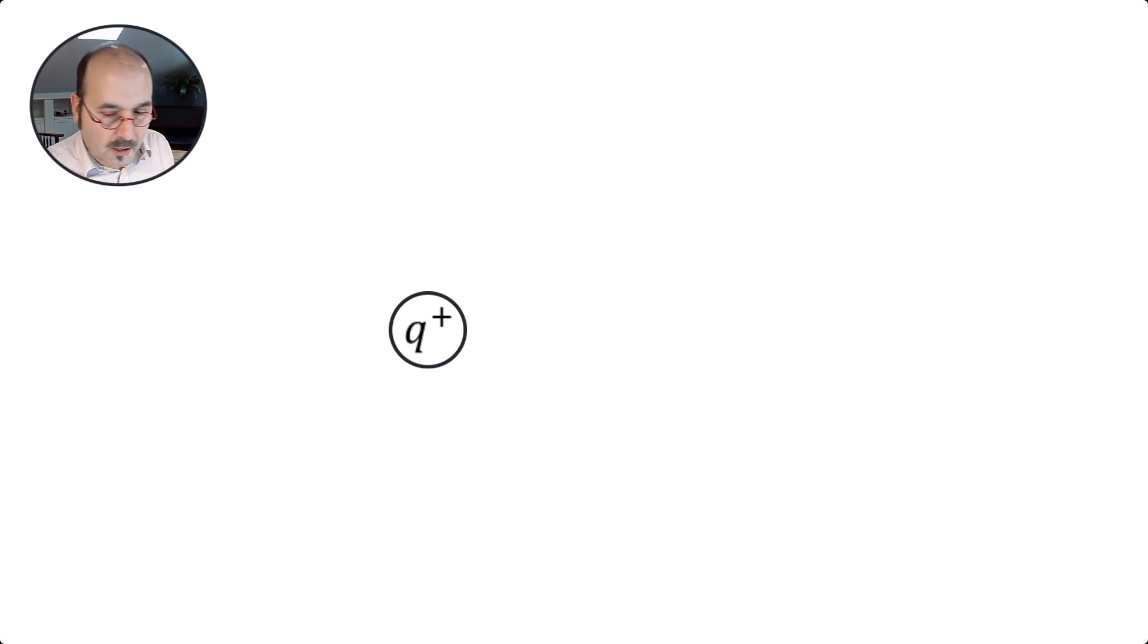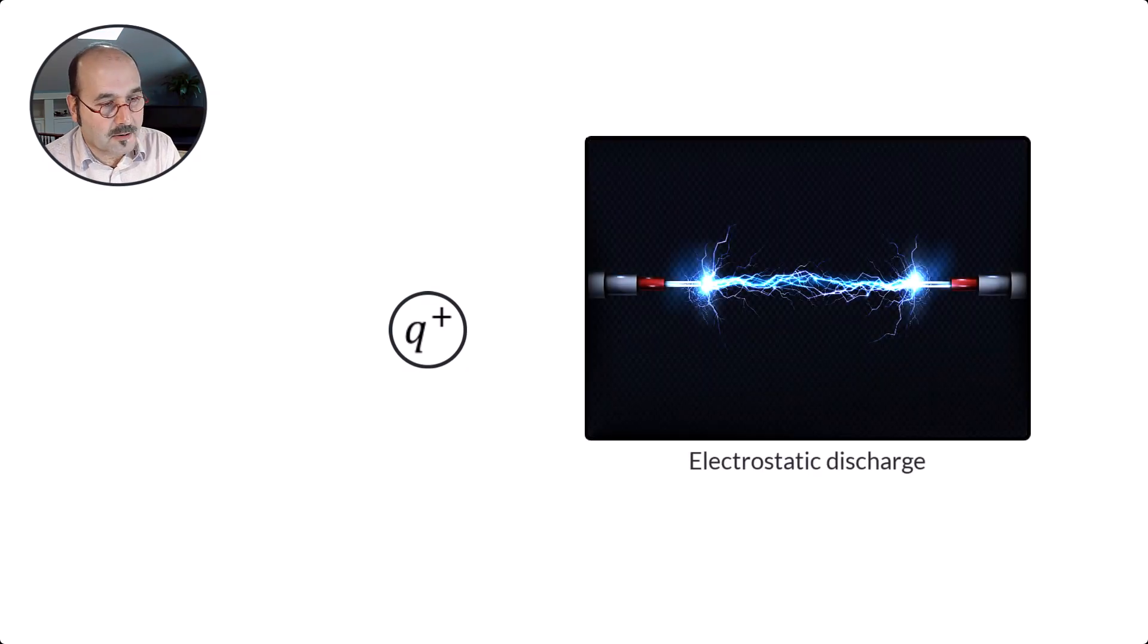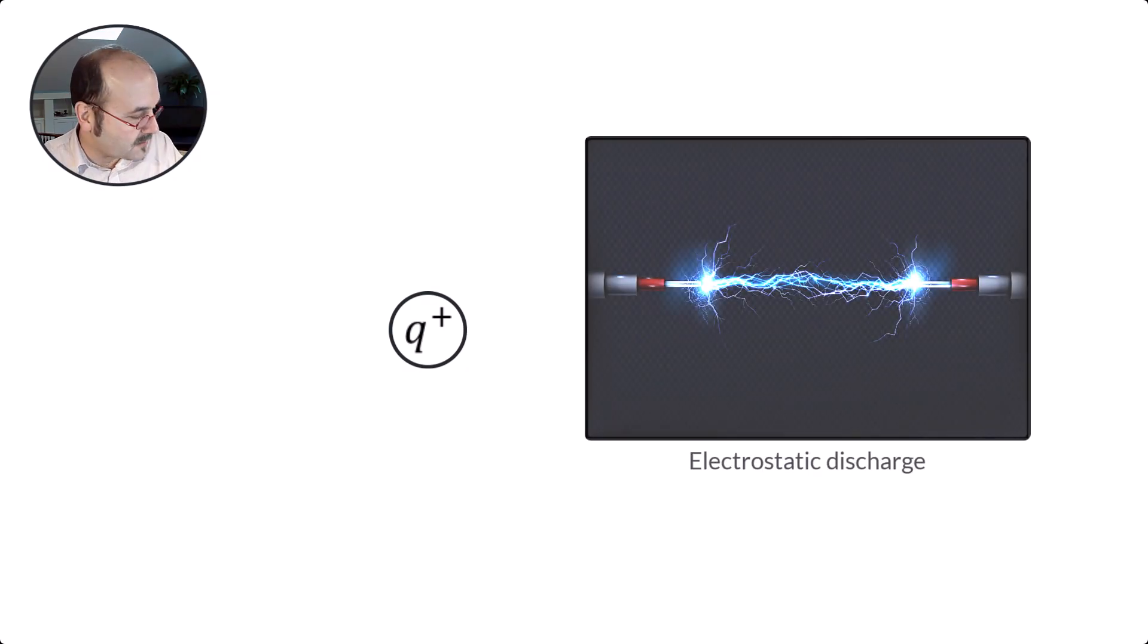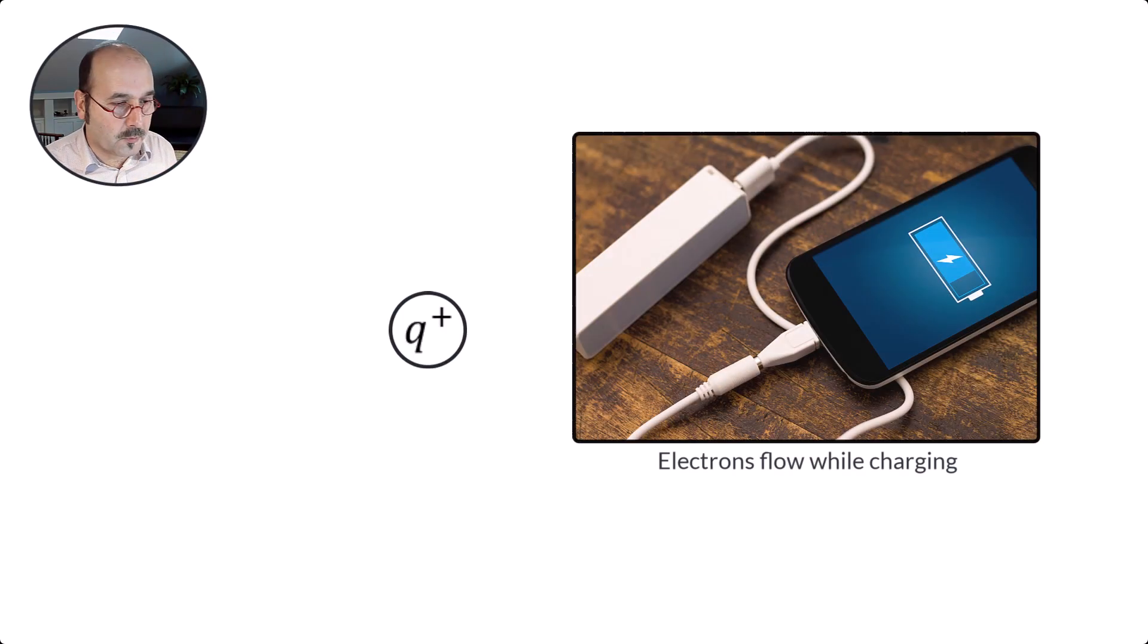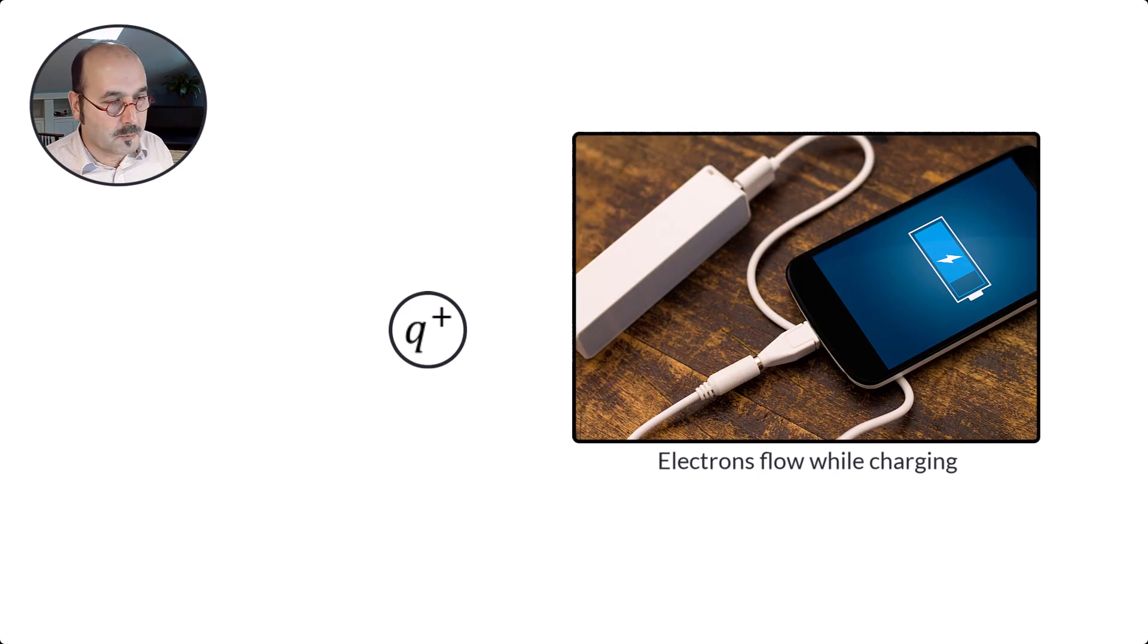Without getting into quantum mechanical details and philosophical discussions, we've experienced electrostatic discharge walking across a carpet, we've seen lightning strike the earth, we use charging for electronics devices. We're comfortable with the idea of electrons flowing around. This is a positive charge.